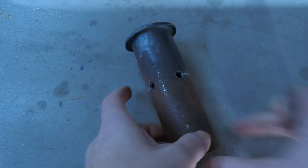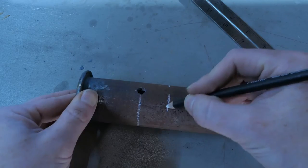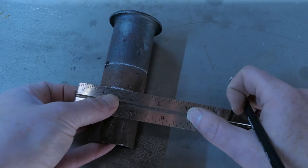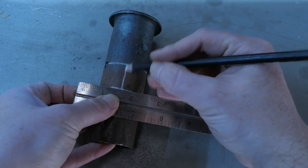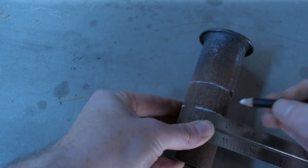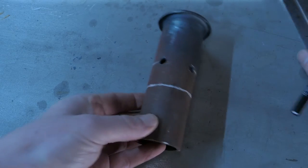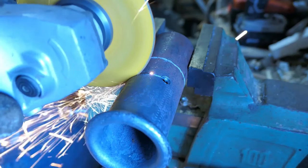Now I'm going to mark out about an inch of material for the vise to hold on to. And then from the center, I'm going to measure out about an inch and a half on either side to give me a 3 inch wide tab to fold out. Then I'm just going to cut out these lines with the angle grinder and a cutoff wheel.